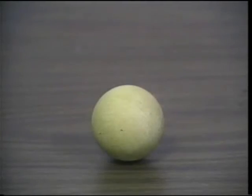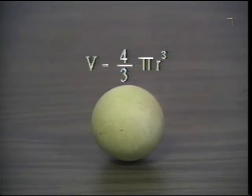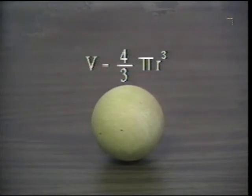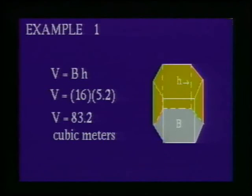Because it is not easily shown how the formula for the volume of a sphere can be developed, we will accept that the formula for the volume of a sphere is four-thirds times pi times the radius cubed. Now let us look at some examples where we will calculate the volumes of various solids. Example 1: Find the volume of a hexagonal prism with the area of the base equal to 16 meters squared and a height of 5.2 meters.